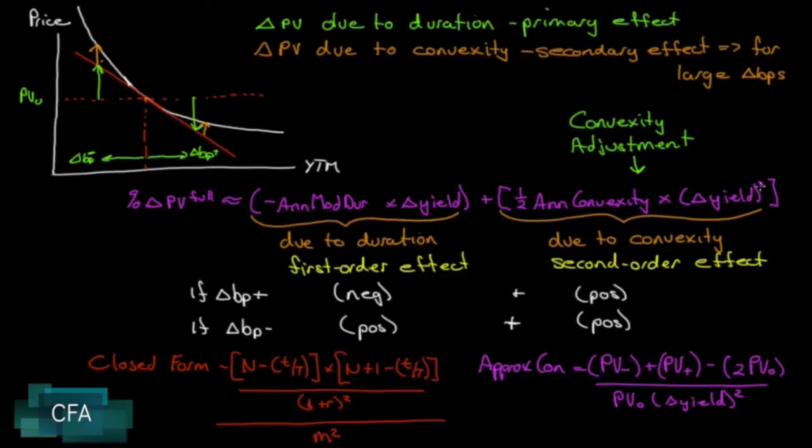This is a linear relationship, this will be a curved linear relationship that's due to convexity—that's our second order effect. Notice that convexity will always correct the price of the bond in a positive direction.